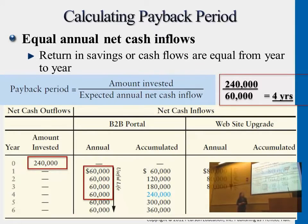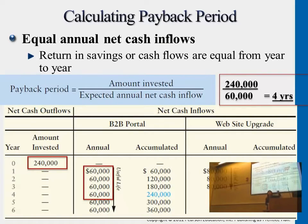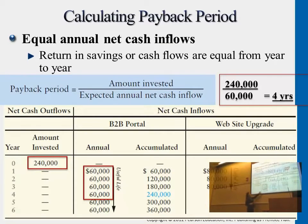If you invest in the website upgrade, you get your money back in a shorter time frame — three years. But after that, you're not getting anything else. You've just covered the $240,000 and that's it. For the B2B portal, you're covering it in a longer time frame of four years, but after that you're getting $120,000 more — two additional years of returns.